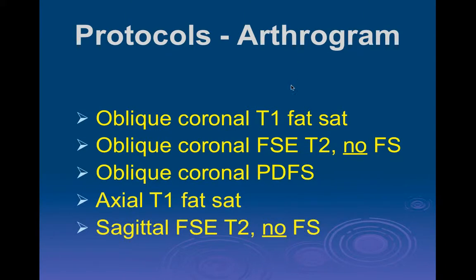When we do arthrography, I don't like to image before and after giving contrast — I just put the contrast in and image once. A lot of people like to do both; in the past it was popular because you could charge for both and get reimbursed by Medicare, which you can't anymore. For arthrography, instead of coronal T1 I do a coronal T1 fat sat; the T2 is still not fat suppressed, PD stays the same, and I change axial T1 to axial T1 fat sat, then sagittal T2 without fat suppression.